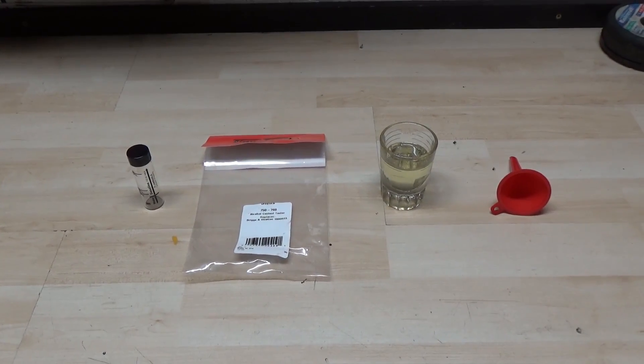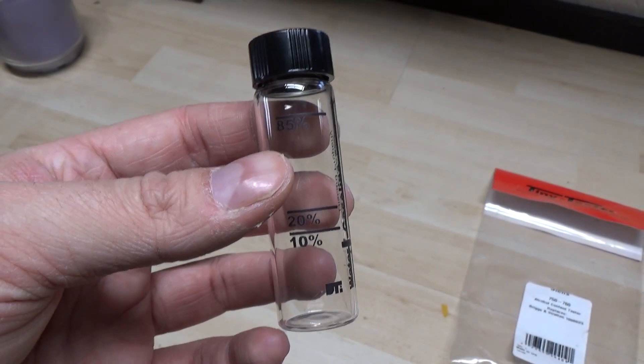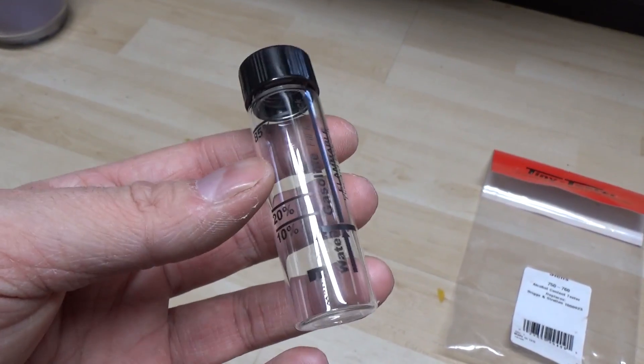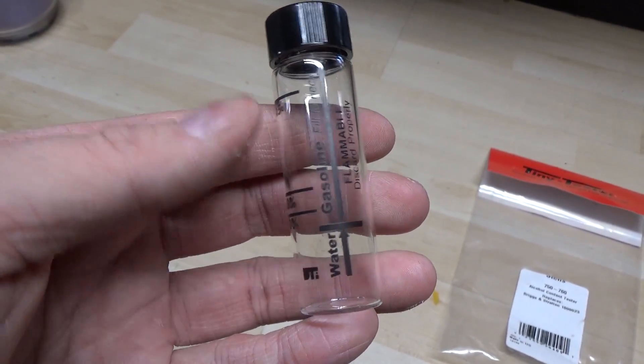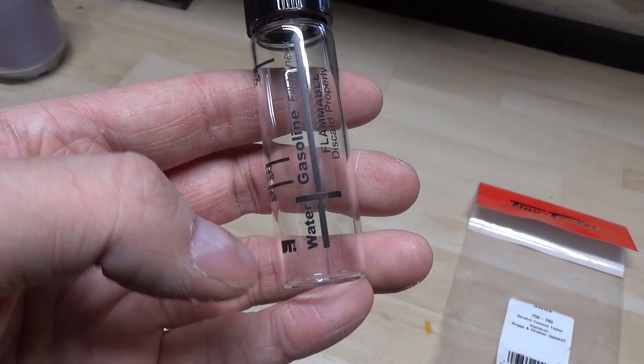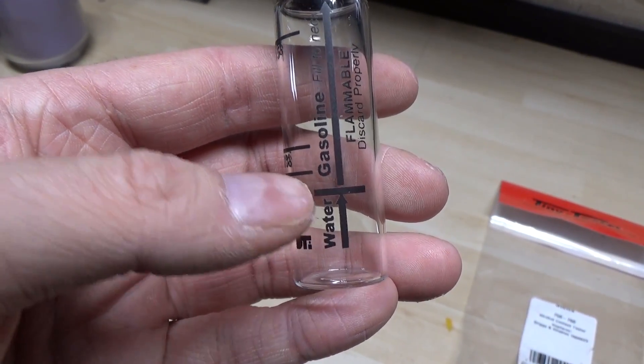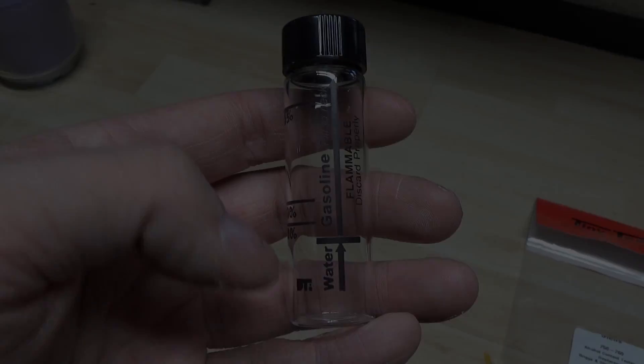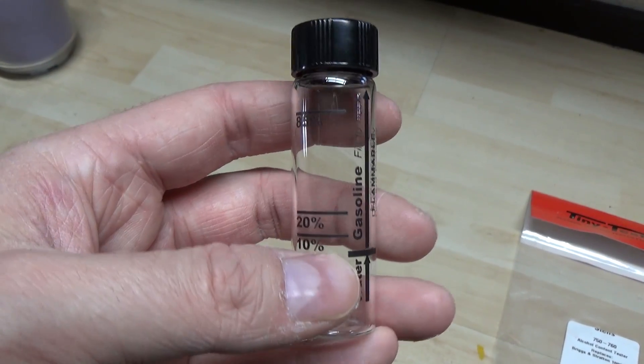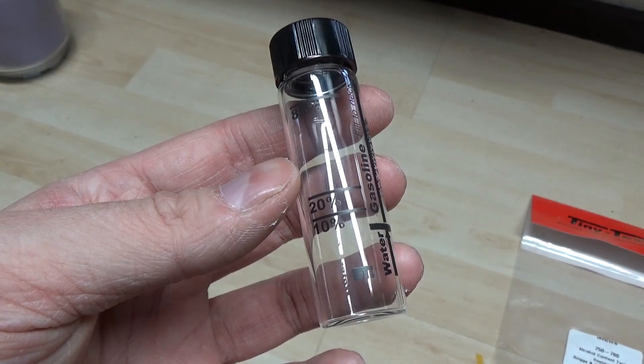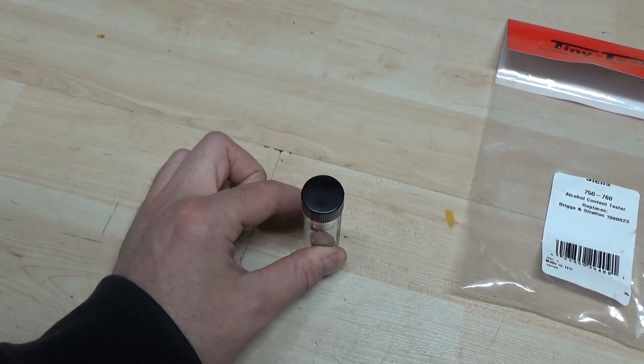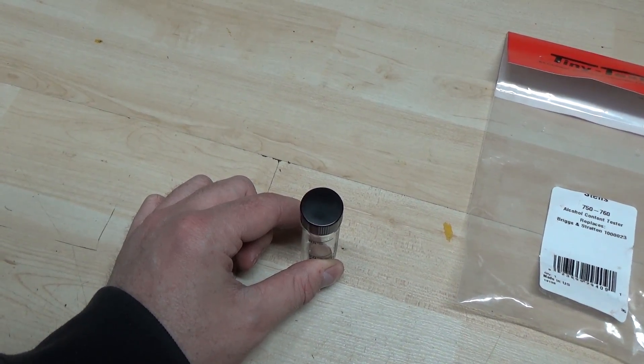So we have here our alcohol content tester. What is an alcohol content tester? Well it's quite simple. It's just a glass vial but they give you these markings on them. The instructions say that you fill this glass vial with water up until this line right there. Once you've filled the vial with water you're going to fill the rest of the vial with fuel. You're going to then shake this vial and then you're going to let it sit in the upright position just like that for five minutes.